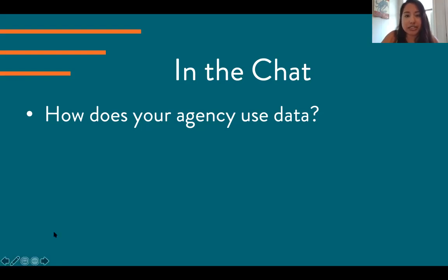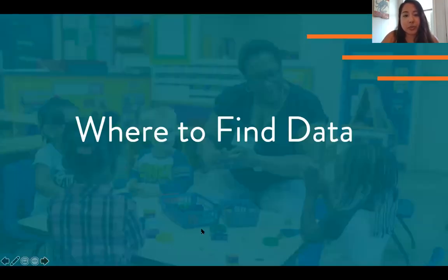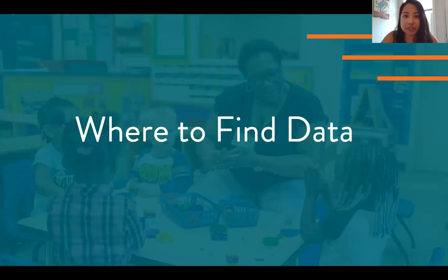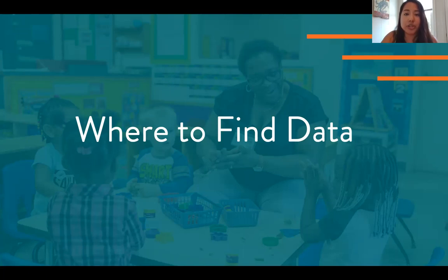One thing we know about data is that reliable data is the backbone of any effective advocacy work, because it helps us not only define the scope of a problem, but also any potential solutions. So where you look for data to get started in advocacy work will really depend a lot on the question you're attempting to answer with that data. But a good place to start is the Kids Count Data Center.